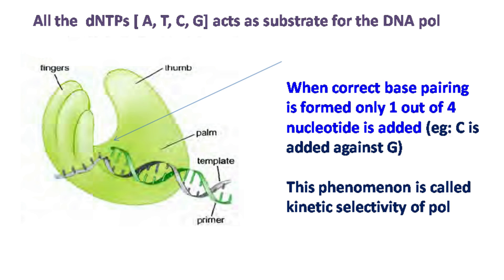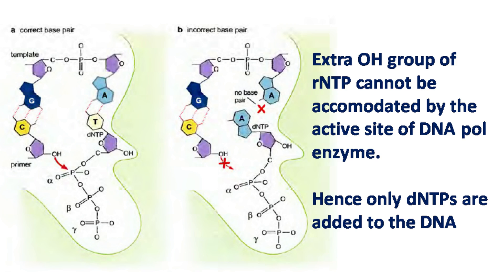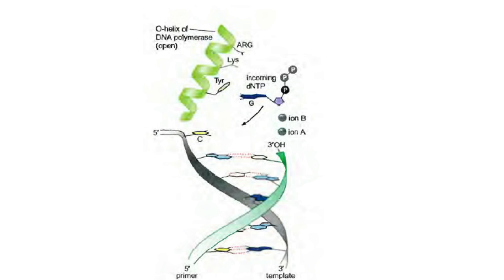It should be noted that all four dNTPs act as substrates for DNA polymerase enzyme. When the correct dNTP base pairs, only one out of four nucleotides is added — this phenomenon is known as kinetic selectivity of DNA polymerase. The enzyme also has a unique ability to distinguish between rNTPs and dNTPs. The concentration of rNTPs is 10-fold higher than dNTPs in the cytoplasm, but only dNTPs are incorporated into the DNA. This occurs because the nucleotide binding pocket is too small to accommodate the extra hydroxyl group of the rNTP, a phenomenon known as steric exclusion of rNTPs.